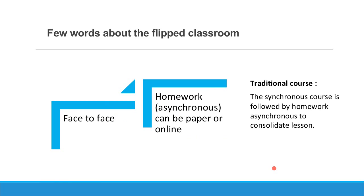Usually, in a normal class, there is face-to-face and then some homework afterward, which can be done on paper or sometimes online. The flipped classroom is just the opposite — before the face-to-face class, people are supposed to do some passive skills activities online: maybe watching a lecture, reading some text, or doing some preparation, and then arriving to class prepared. So the preparation is done before, and then during the face-to-face, there are more activities about consolidation, workshops, something much more pragmatic.